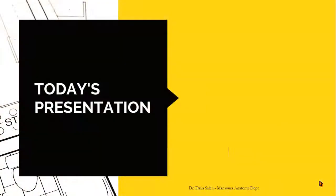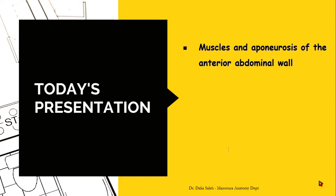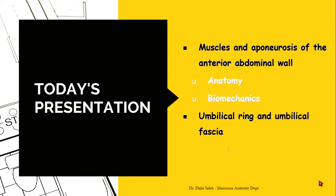In today's presentation, I'm going to cover the following points. I will talk about the muscles and aponeurosis of the anterior abdominal wall regarding their anatomy and biomechanics. Then I will describe the umbilical ring and umbilical fascia and talk about their anatomical variations.